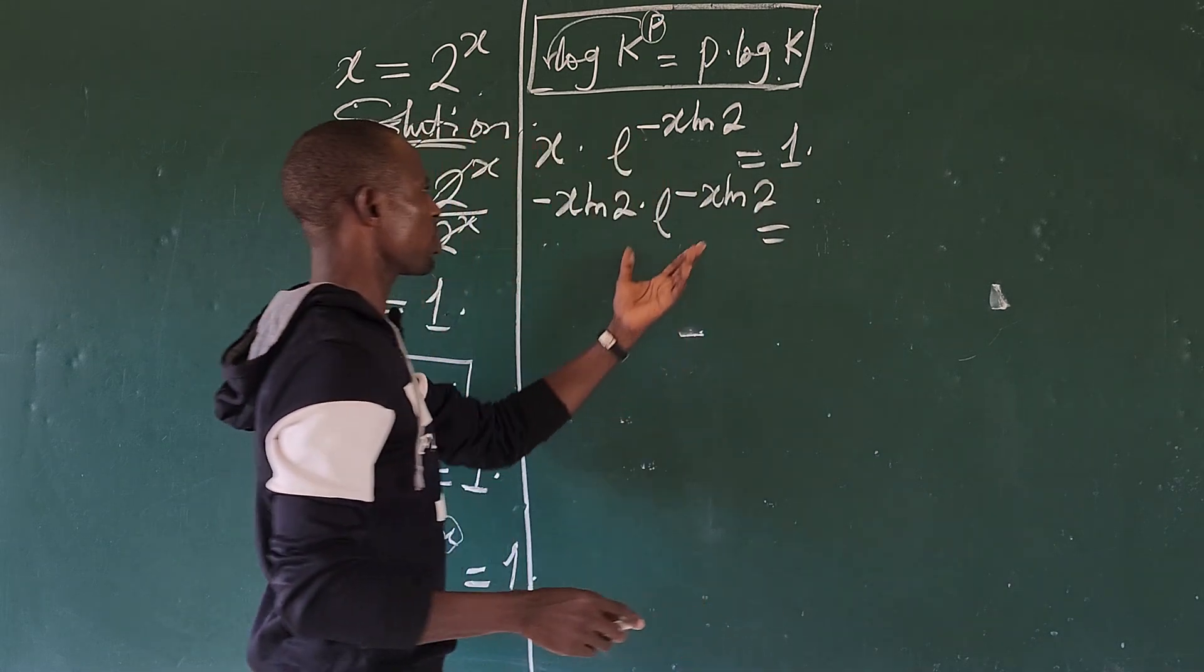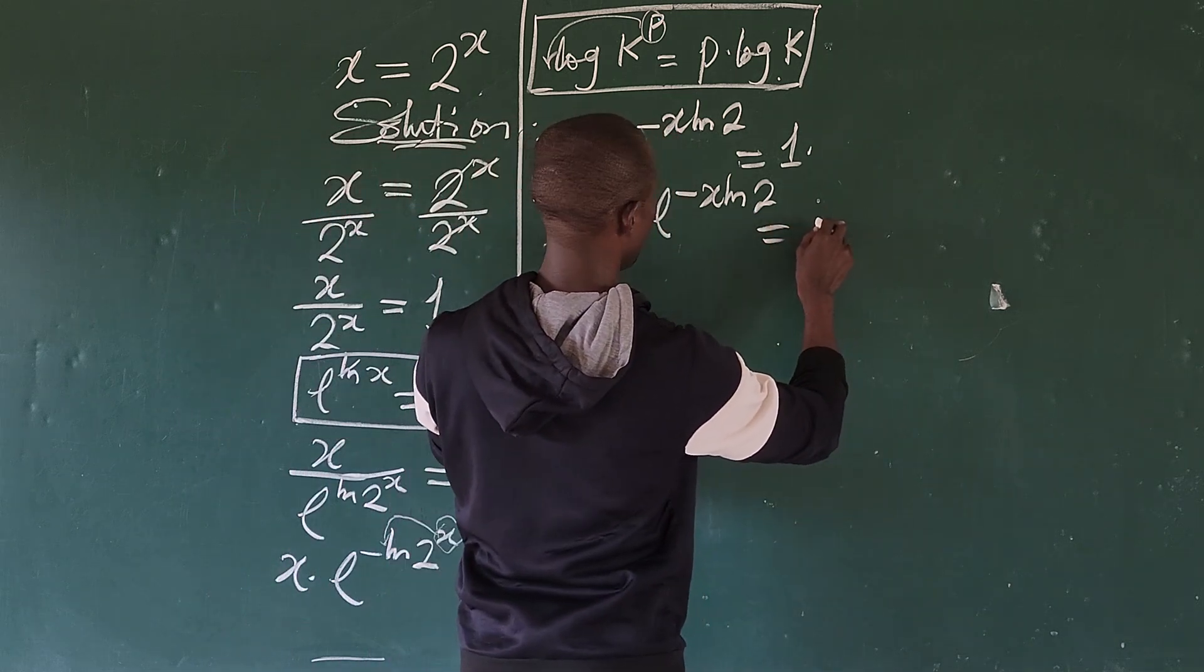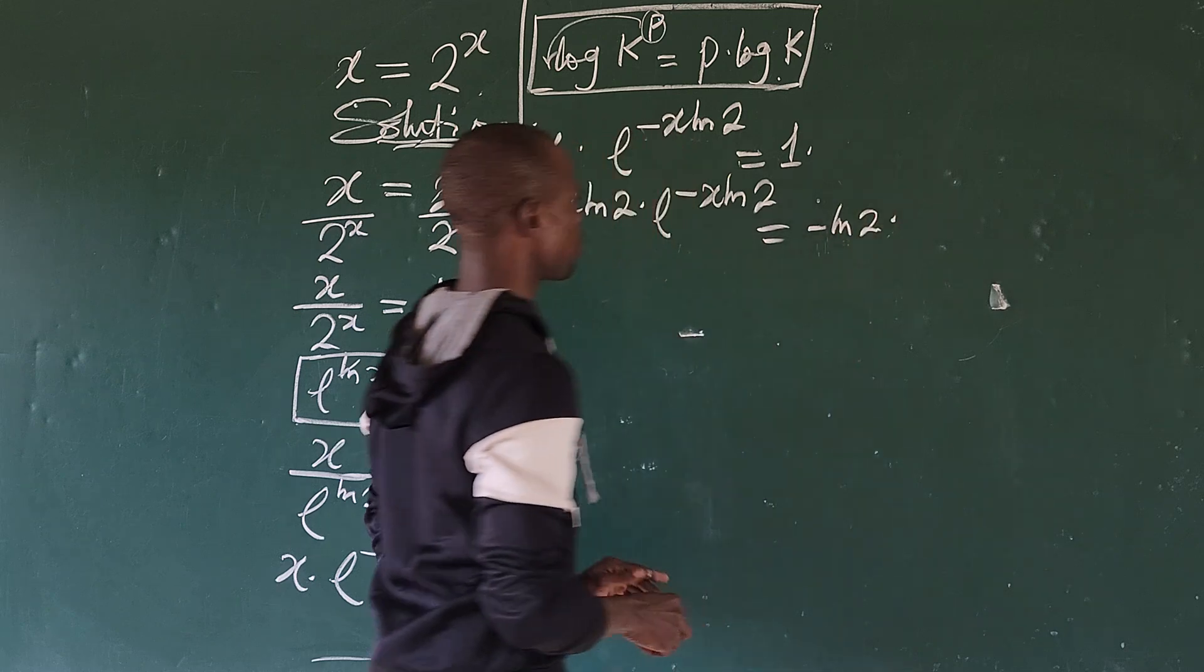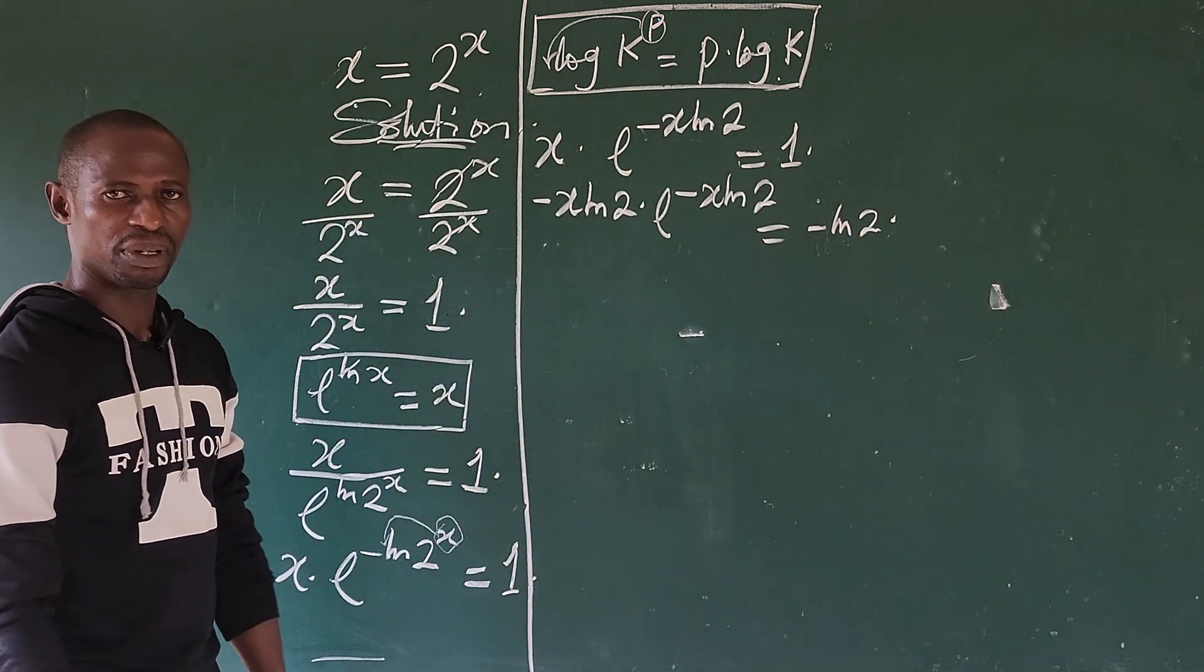If we do that, this is going to give us minus x times ln of 2 times e to the power of minus x ln of 2, equal to whatsoever we are doing to this side we must do to this side also. So we are going to come up with minus ln of 2 also. Now let's bring our Lambert W function.